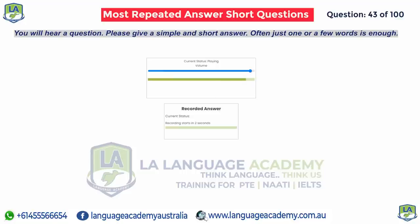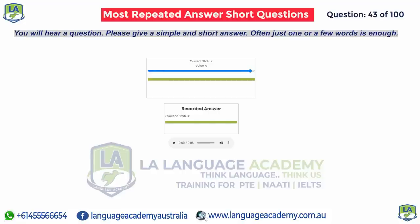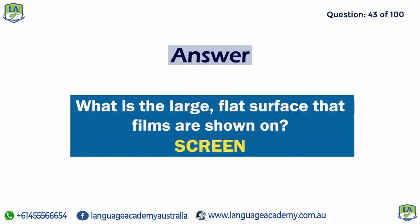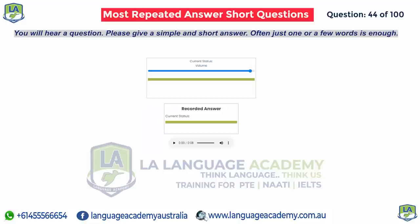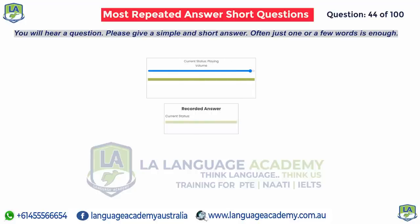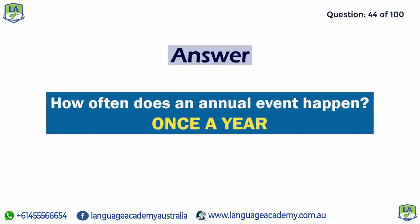What is the large, flat surface that films are shown on? Screen. How often does an annual event happen? Once a year.